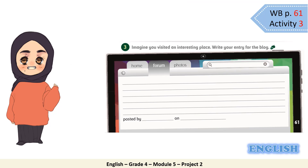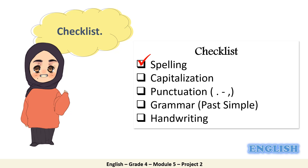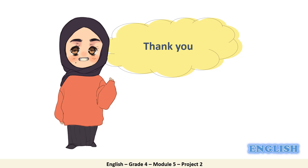Now in the workbook, page 61, Activity 3 — it's your turn to write a blog about an interesting place that you visited recently. Make sure you refer to this checklist after writing the first draft. You need to check your spelling, capitalization (the use of capital letters), punctuation (the use of full stops and commas), grammar — make sure you write your sentences in the past simple — and make sure you write in a nice handwriting. Thank you. See you next lesson.